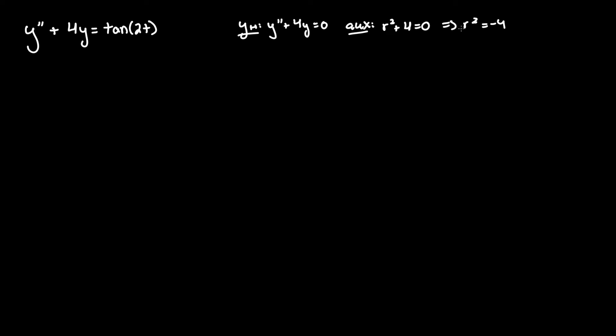So r squared equals negative 4. Take the square root to find the root and r equals 0 plus or minus 2i where alpha h equals 0 and beta h equals 2. That's it.